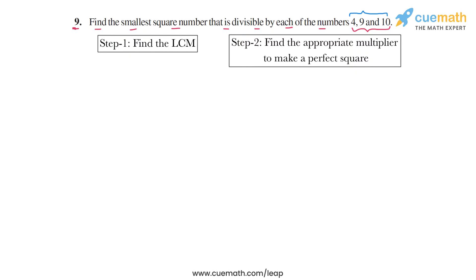The resulting number that we get after step 2 will be a multiple of all three numbers and it will also be a perfect square. So let me show you both of these steps.